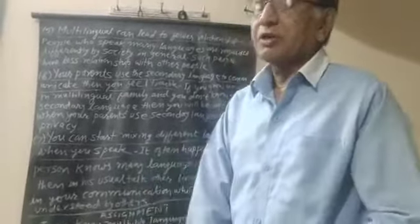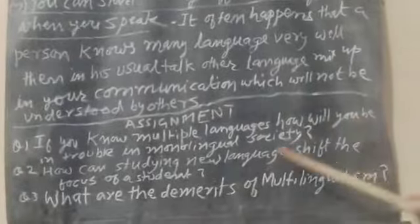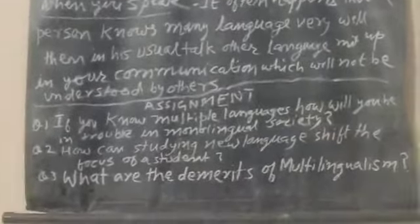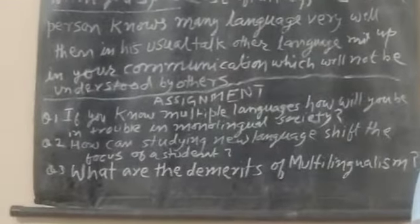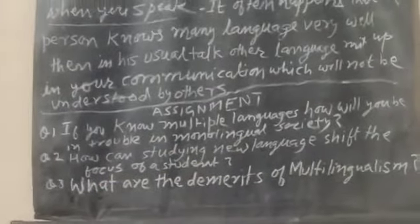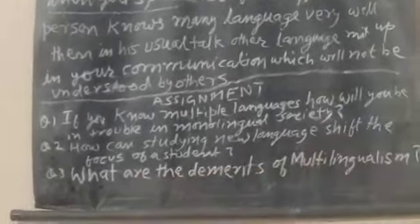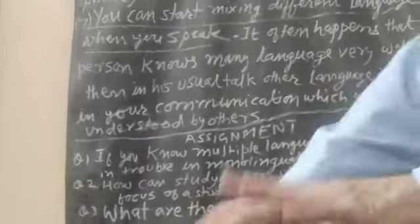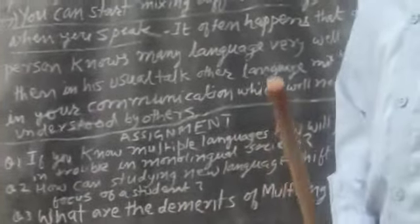This is all about the demerits of multilingualism. First question: if you know multiple languages, how will you feel trouble in a monolingual society? A monolingual society will not accept you and will not want a secondary language used — just as in the USA, when someone tried to speak Spanish, it was opposed. Second question: how can studying a new language shift the focus of a student? If a school has multilingualism and students are taught other languages, some students will ignore the chief subject and not give attention to specific subjects, weakening their performance. Thank you. Have a nice day, my dear teachers.